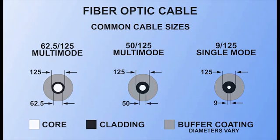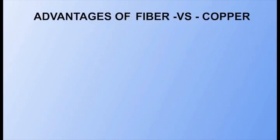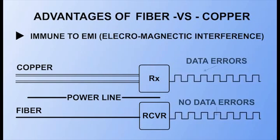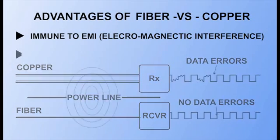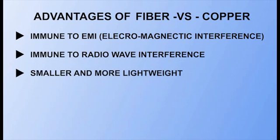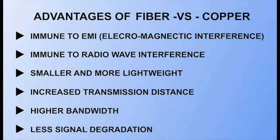Fiber-optic cables have many advantages over copper cable, including immunity to electromagnetic interference and radio wave interference. They are smaller and lighter than copper, capable of greater transmission distance and higher bandwidth, and have less signal degradation.